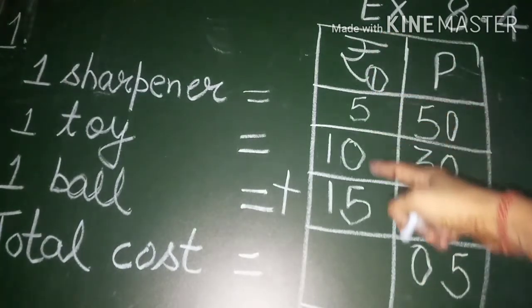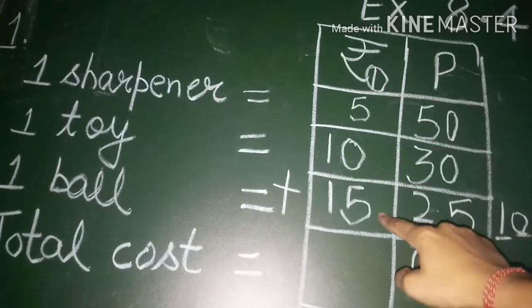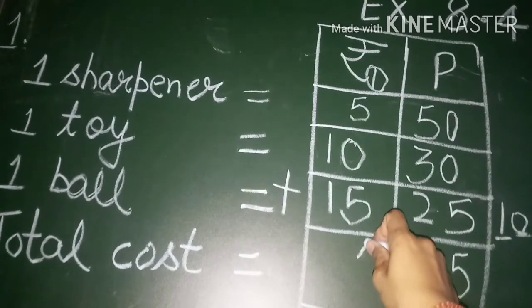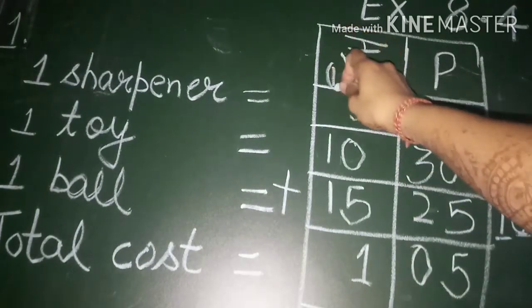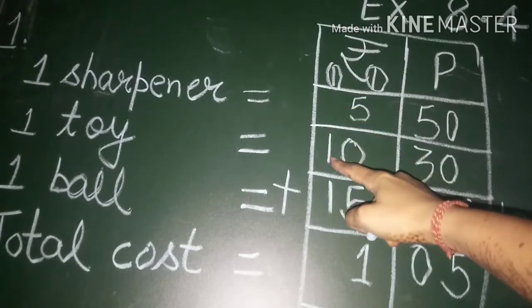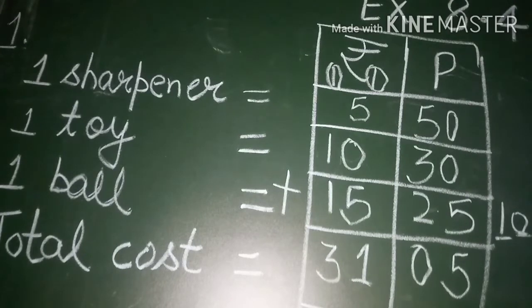Now, we will count these rupees. 1 plus 5 is 6. 6 plus 5 is 11. Again we have 2 digits. So, the right side digit we will write here and left side carry. Now, 1, 2 and 3 means it is 31 rupees and 5 paise. In the same way you will solve all the sums in exercise 8.4.